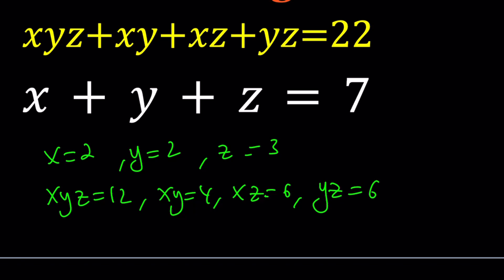And if we add these up, 12 + 4 + 6 + 6, that's going to give us 12 + 12 + 4, which is 28. So we're kind of over the 22 by 6. That's too much.